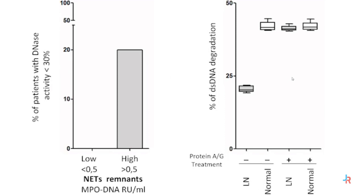Moreover, it is of some interest that if serum — in which DNase degradation and therefore DNase activity is determined — is treated with protein A in order to remove antibodies, the percent of DNase activity is restored. Here are patients with lupus nephritis after treatment with protein A and therefore after removal of antibodies, and here are the same sera before removal of antibodies.